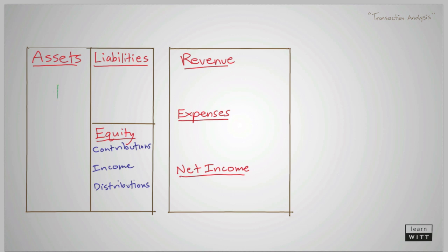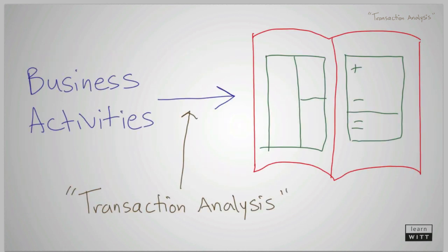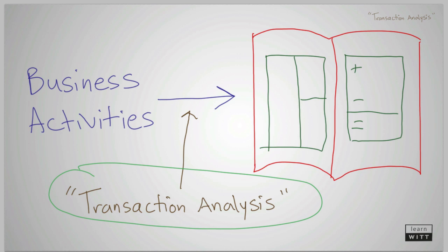If an owner contributes assets to the business, equity increases. When income increases or decreases, equity increases or decreases. If a business distributes assets from the business to the owners, equity will decrease. As a review, through transaction analysis we determine how a transaction is reflected in the accounts on the books.